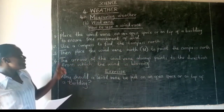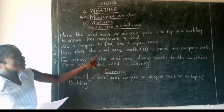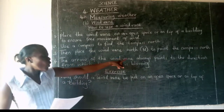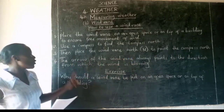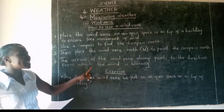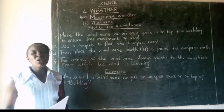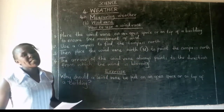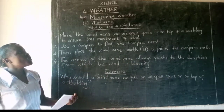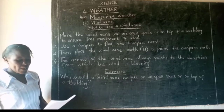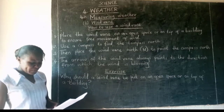The arrow of the wind vane always points to the direction from which the wind is blowing. And that is how you use a wind vane.